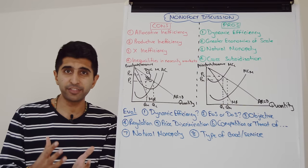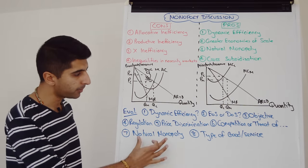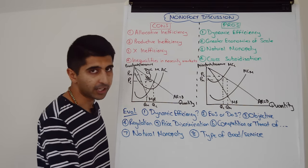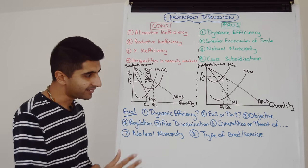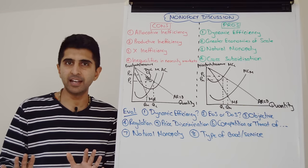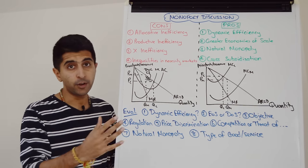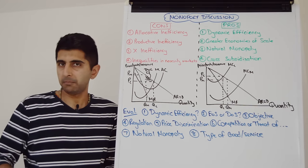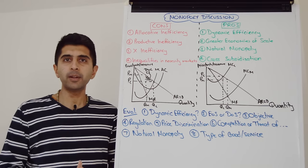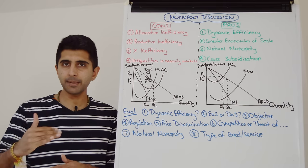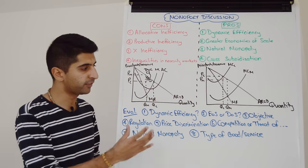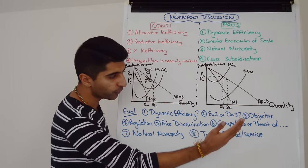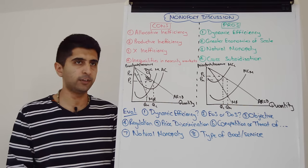We've already said we have to think about whether the market is a natural monopoly market or not. And also we have to think about the type of good or service that is made here. For a necessity, monopoly definitely is going to be bad news. But hey, you know, if it's a more luxury good, electronics as an example, then maybe we don't mind necessarily paying a bit higher for these goods if we get constant reinvestment as a result of dynamic efficiency. So the type of good or service can give you some quite unique evaluation points.